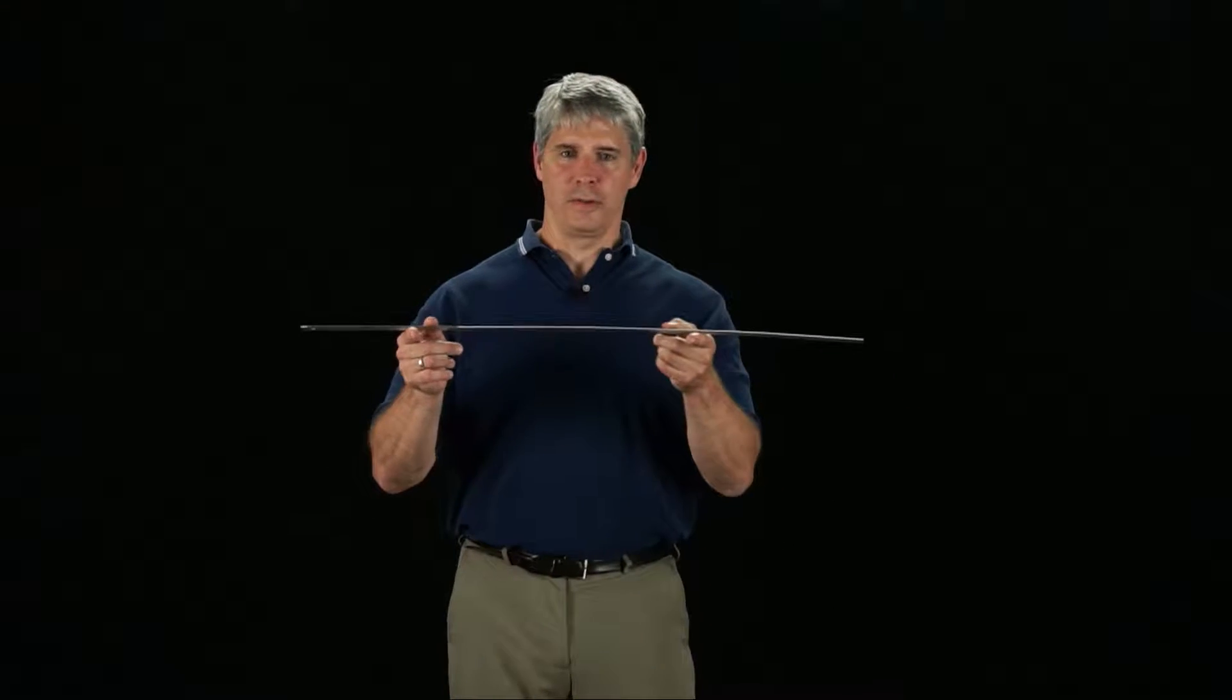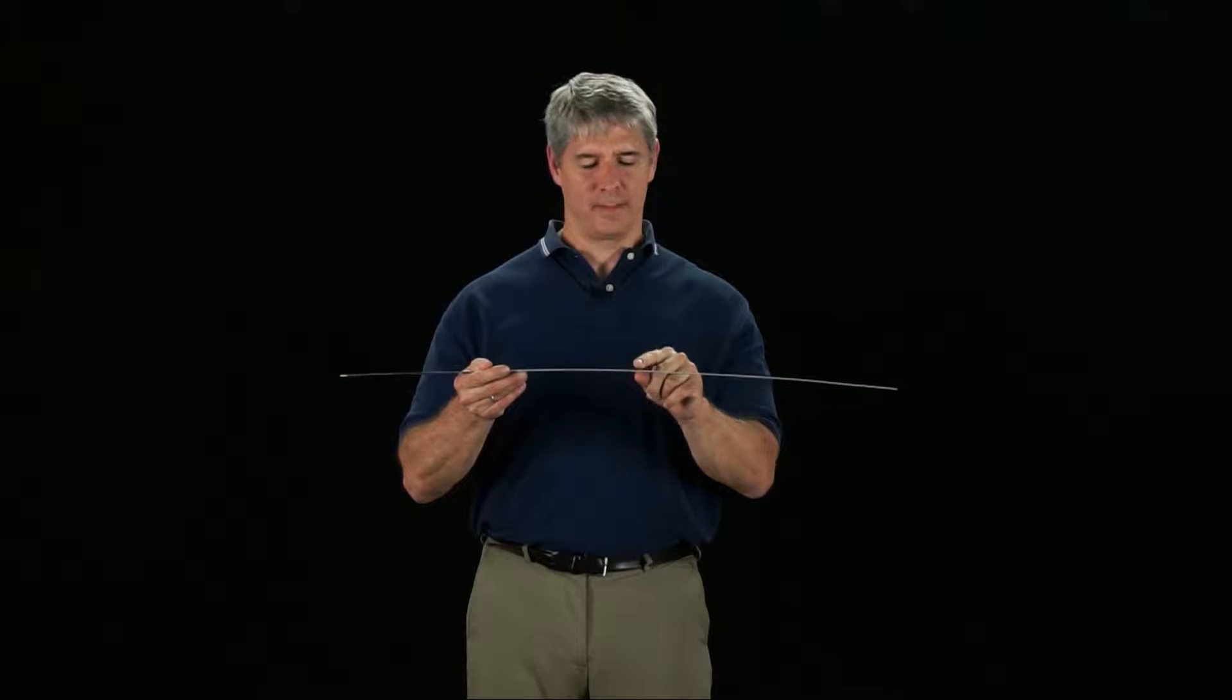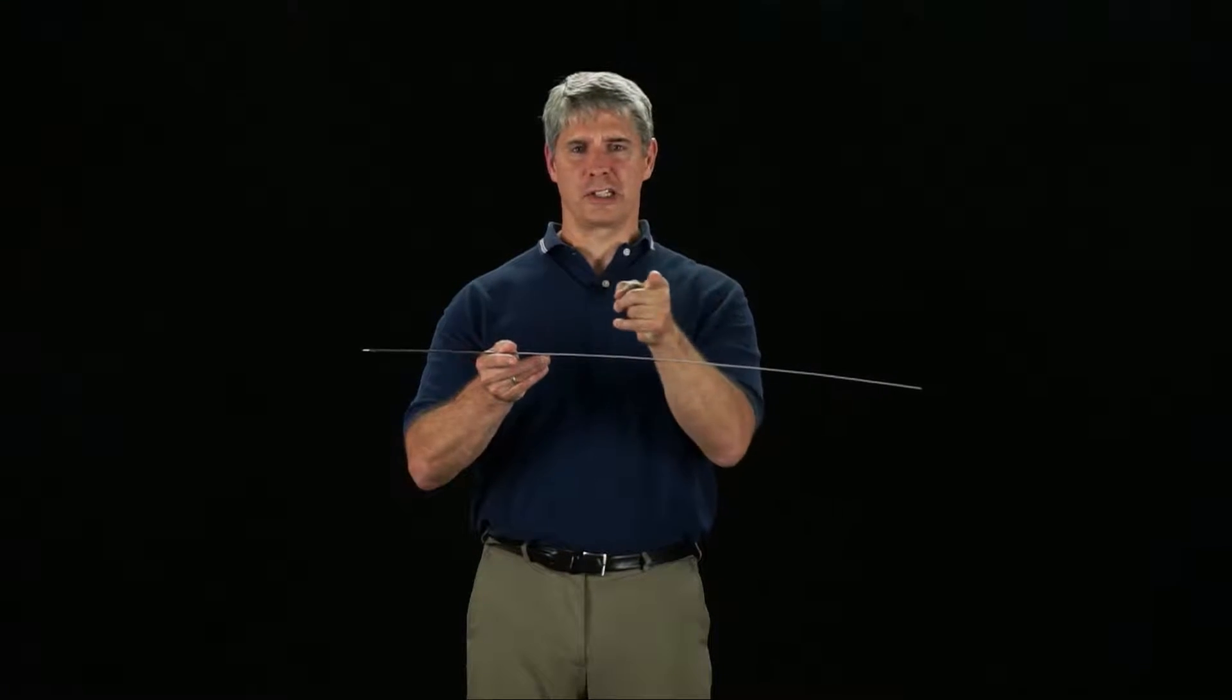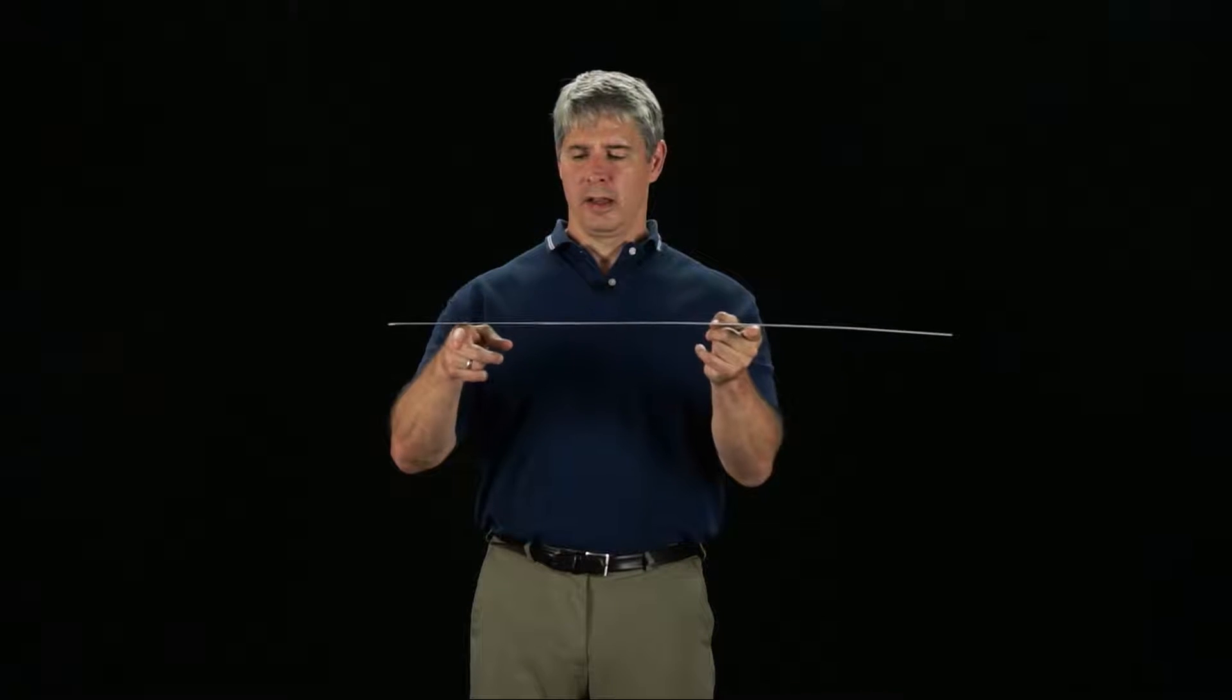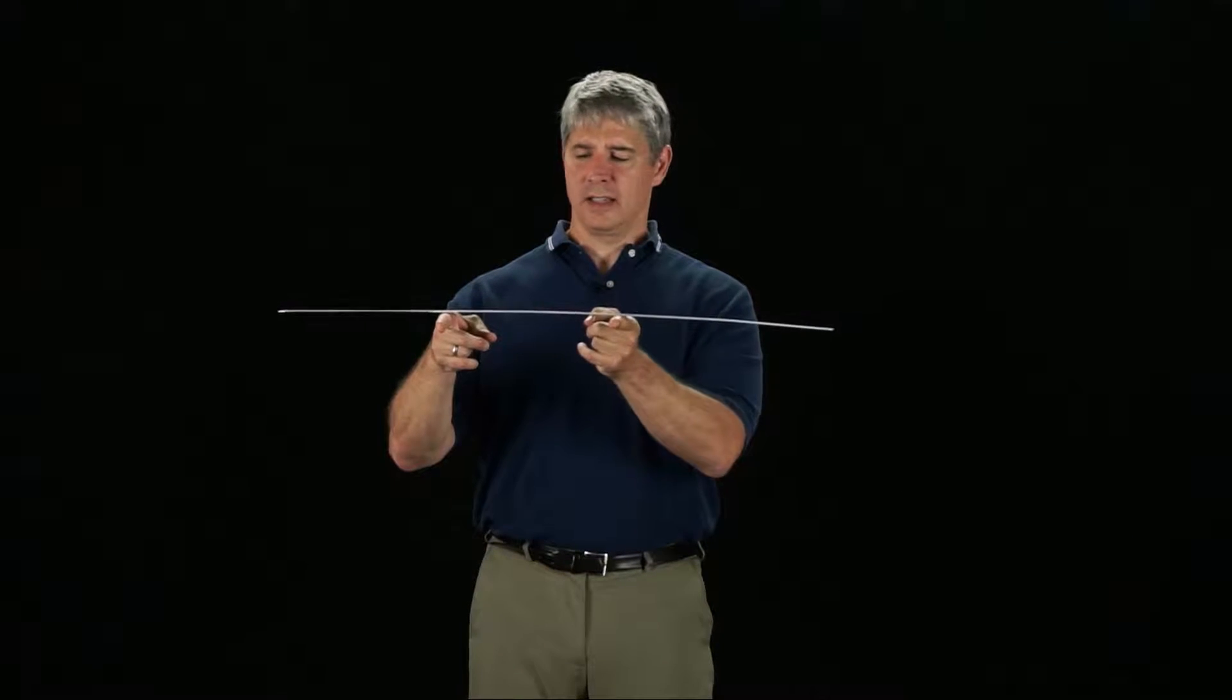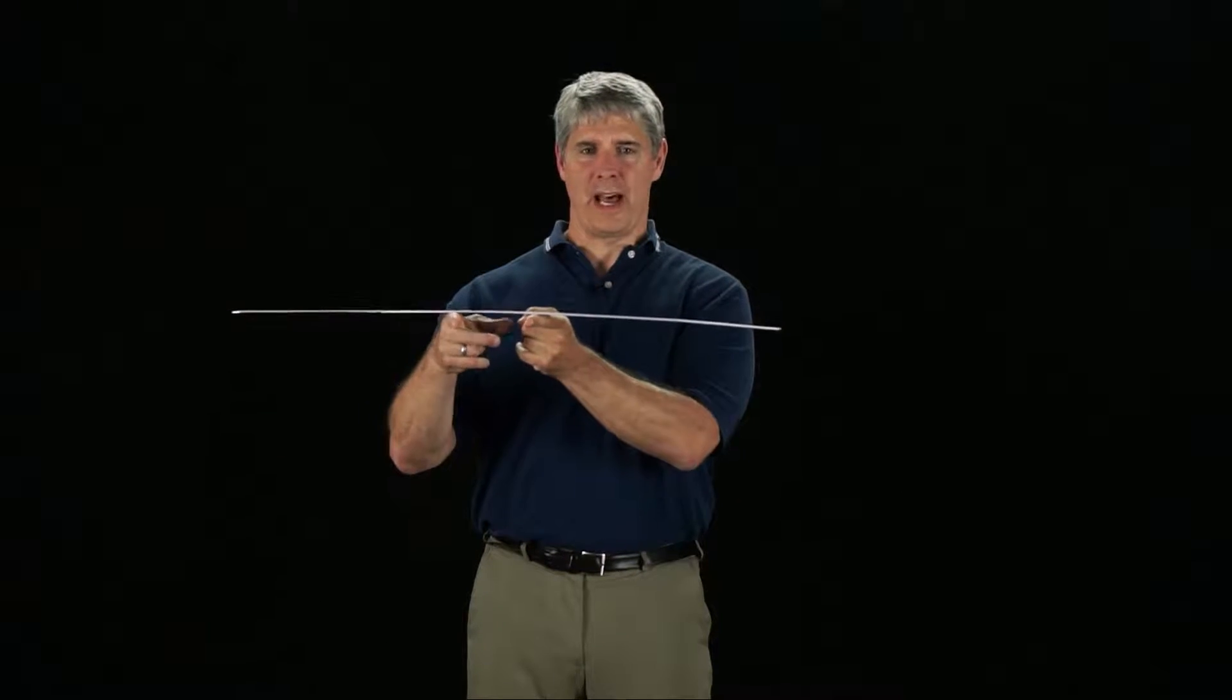Let's return to the meter stick trick from the beginning of this chapter. We balance the meter stick on two fingers with one finger close to the center of mass. If we move this finger slowly toward the other, the stick doesn't fall. Instead it slides to keep its center of mass between the fingers.